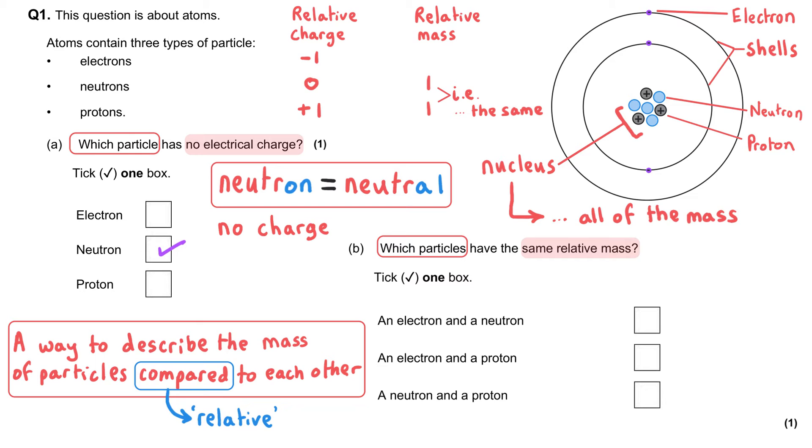That means that if we had a really, really small seesaw, and we had a neutron on one end of a seesaw and a proton on the other end of the seesaw, this seesaw would be balanced because they have the same relative mass. And so the correct answer here is the final option of a neutron and a proton.